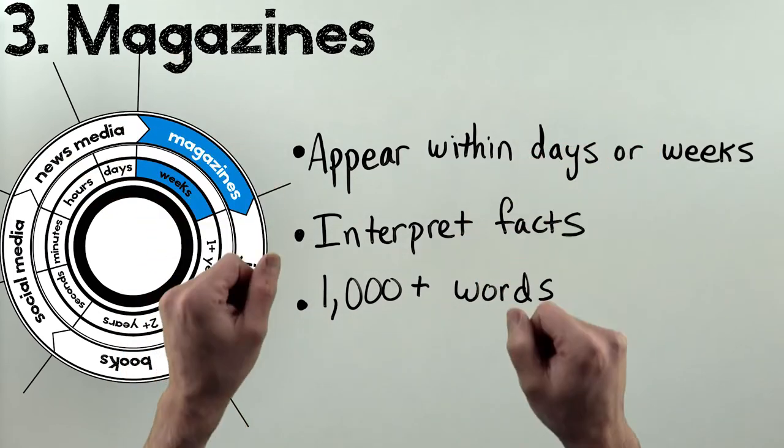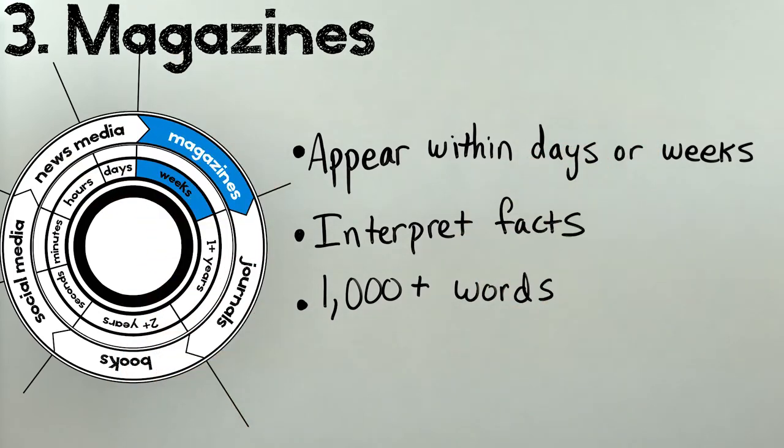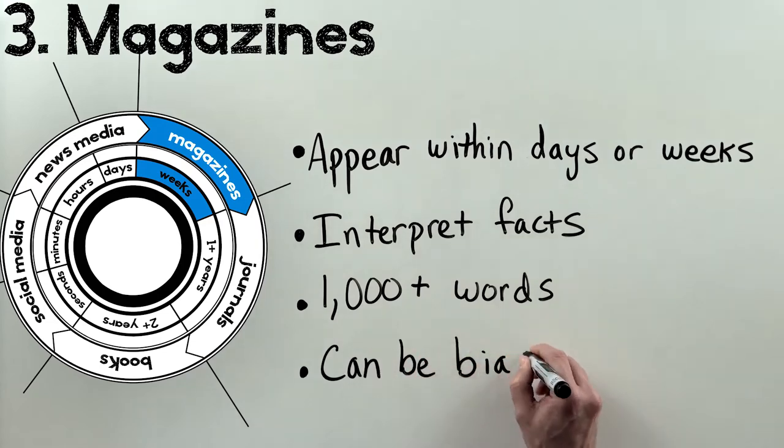Why does the event matter? How should we react? That kind of interpretation is one of the main advantages of magazines, but it's also a drawback. Interpretations can be thoughtful and compelling, but they can also be politically biased or just plain wrong.